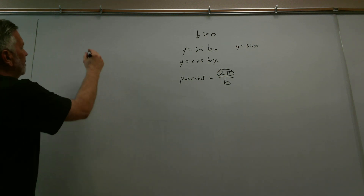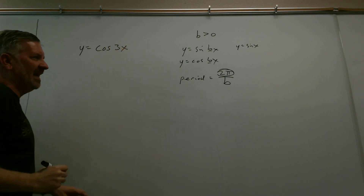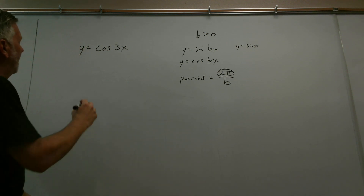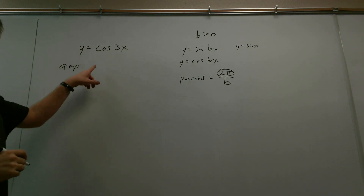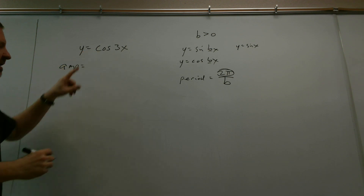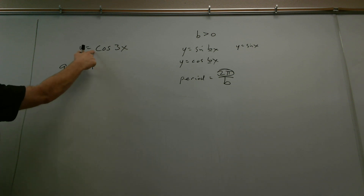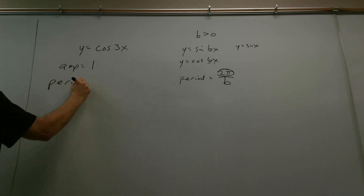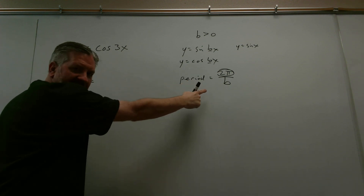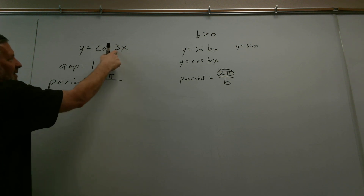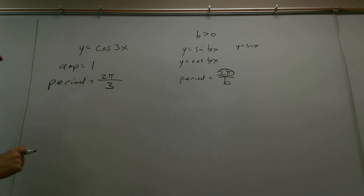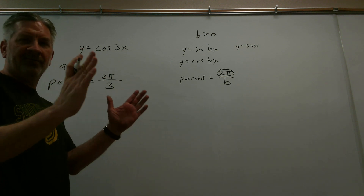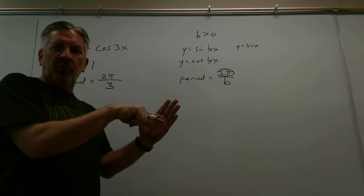The next example is: sketch the graph of y equals cosine(3x). The amplitude is one — the coefficient of cosine is one — so no reflection. The period is two pi divided by b, so it's two pi divided by three. I'll also add an extra calculation: since one period gets chopped into four equal pieces, I need to find one-fourth of the period — I'll call this 'pieces.'